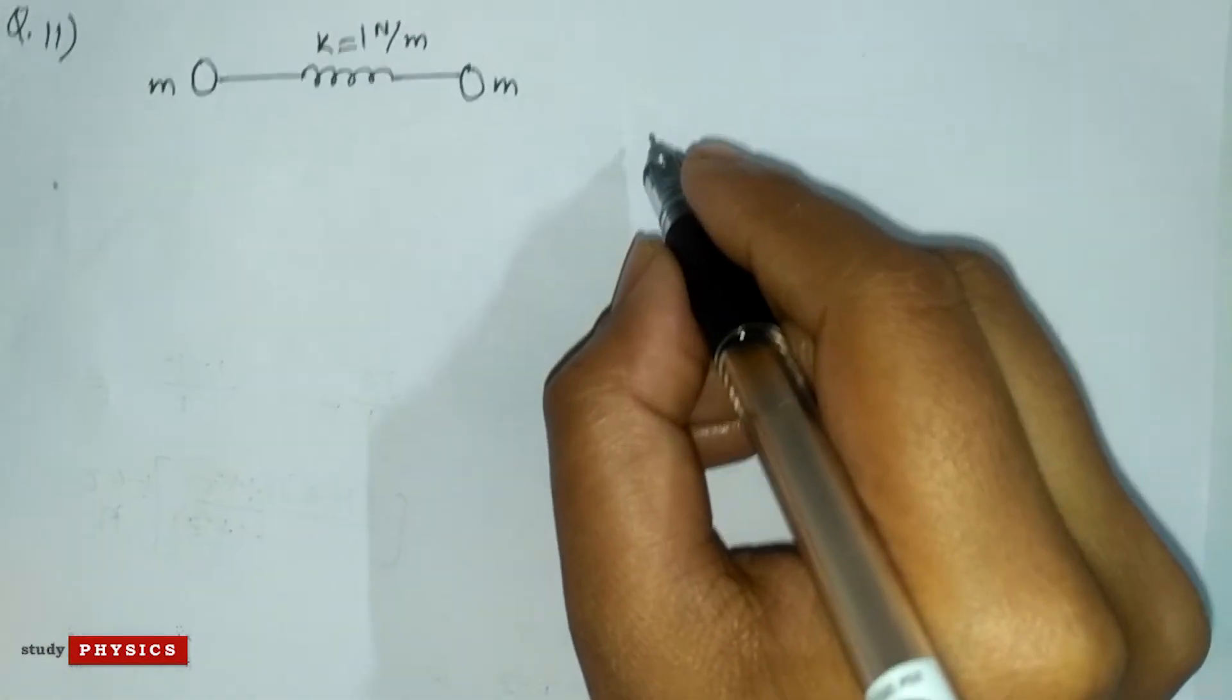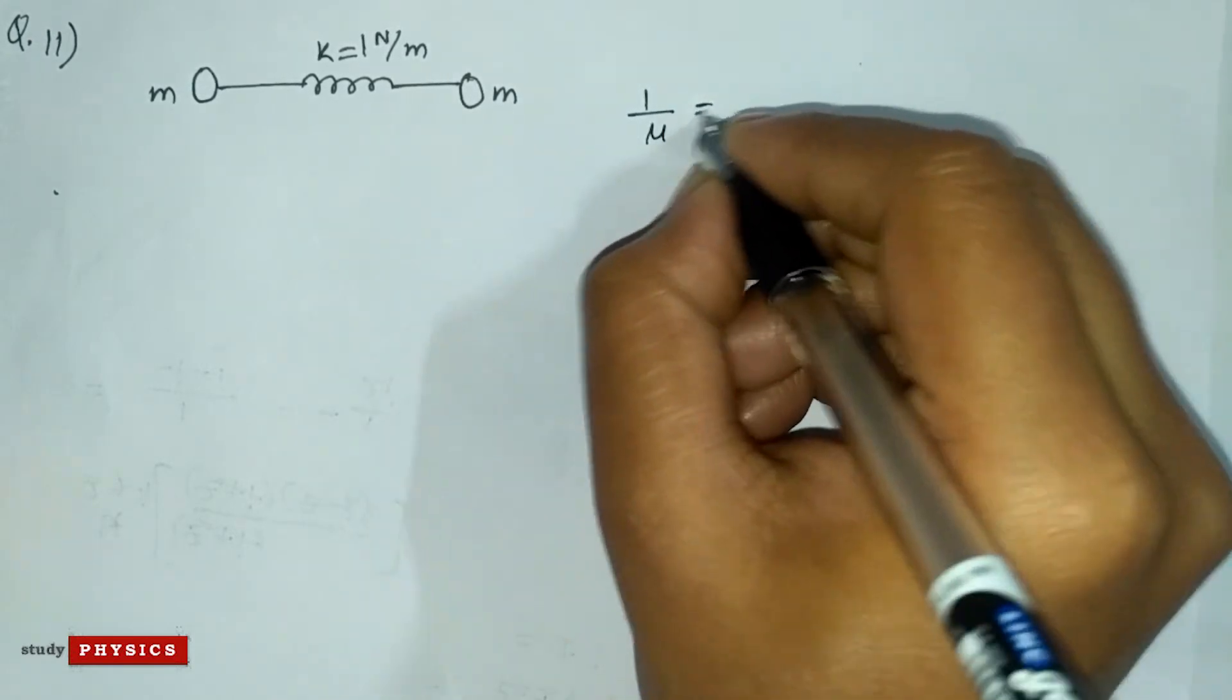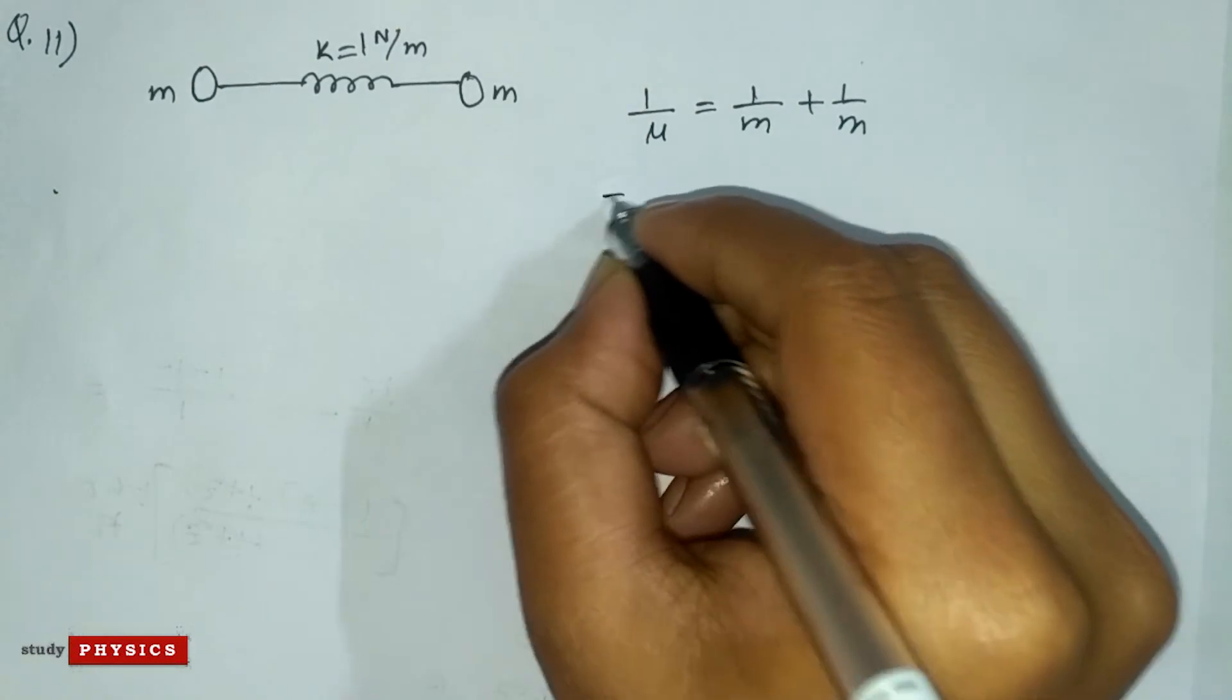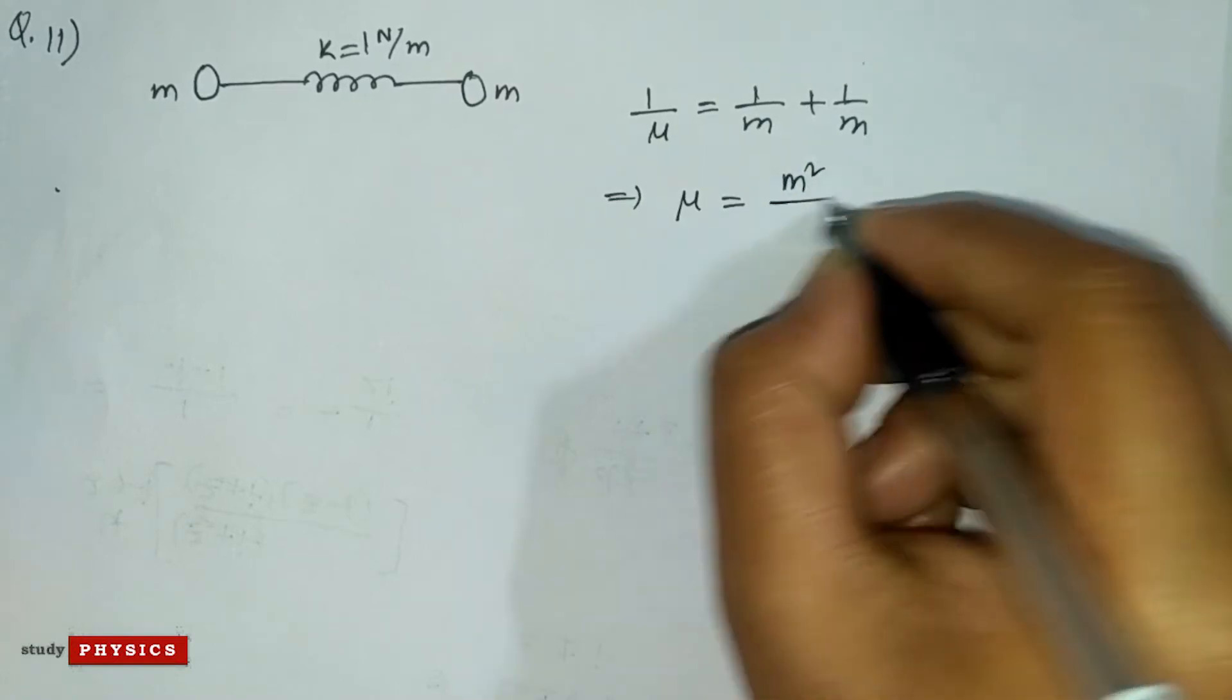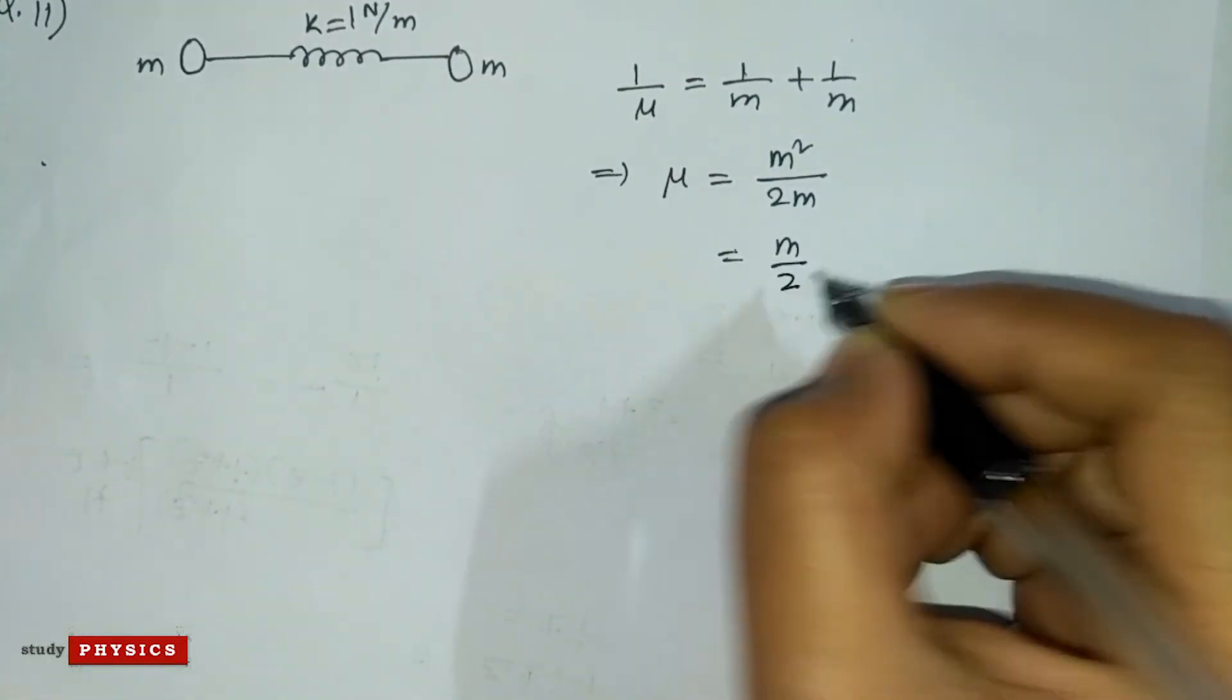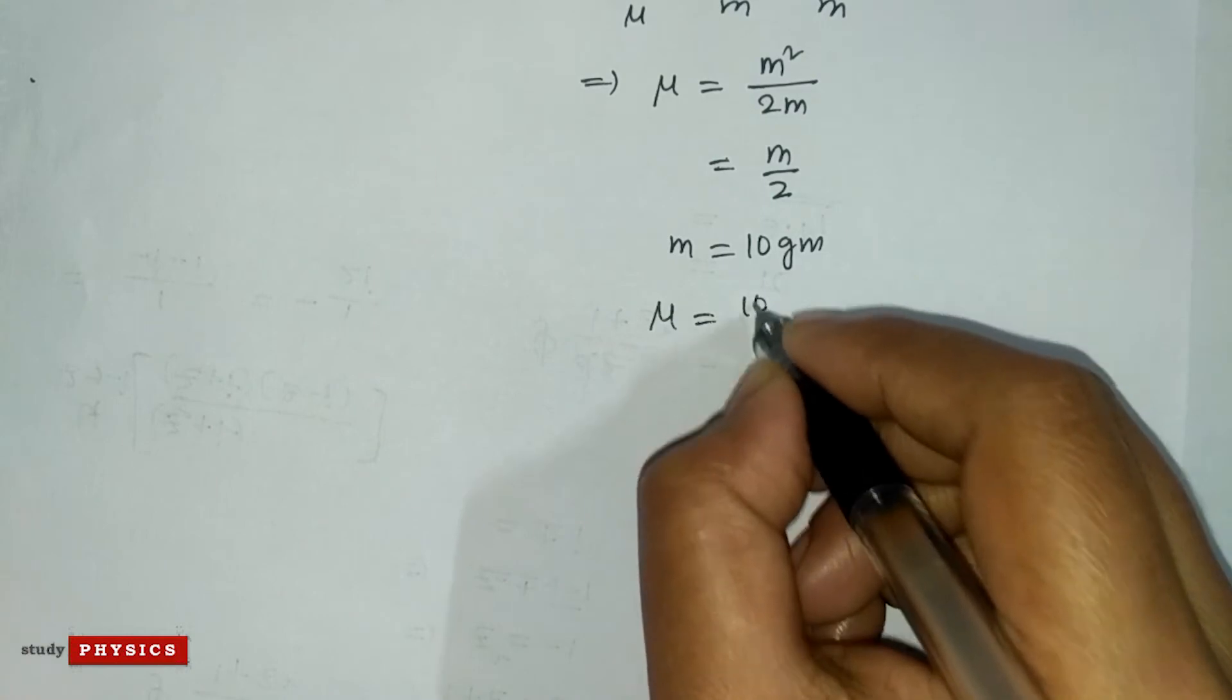First, we know from the reduced mass concept that 1/μ = 1/m + 1/m, so μ = m²/2m = m/2. Since m is 10 grams, μ = 10/2.